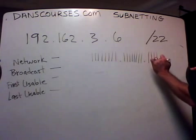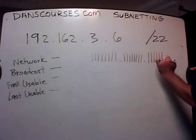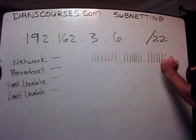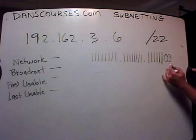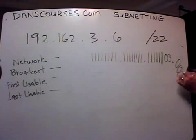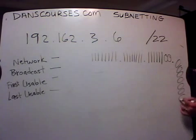Seventeen, eighteen, nineteen, twenty, twenty-one, twenty-two. One, two, three, four, five, six, seven, eight. Two zeros. And then in the last octet, we've got all zeros. Four, five, six, seven, eight.